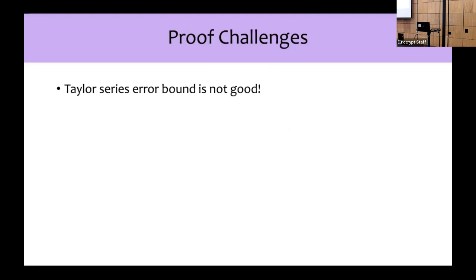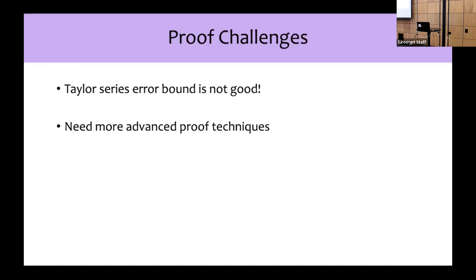What are some of the challenges to formally proving strong error bounds for our sine series approximation? Our first attempt is to simply use the Lagrange remainder term of the Taylor series expansion to bound the error. Unfortunately, this gives a poor error bound. We are able to exponentially improve on this using more sophisticated techniques. We show a stronger error bound using Leibniz's alternating series test. However, proving that our approximation satisfies the alternating series test is not immediate, and in order to do so, we have to calculate the determinants of generalized Vandermonde matrices.